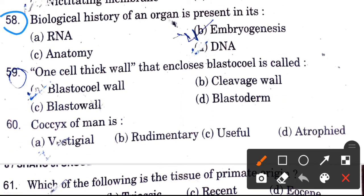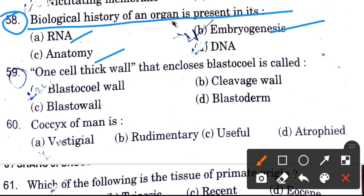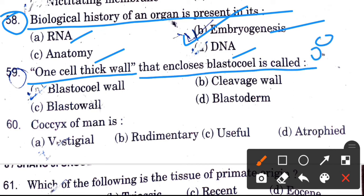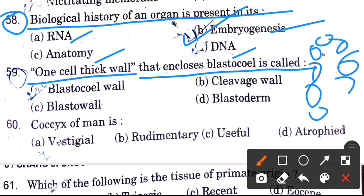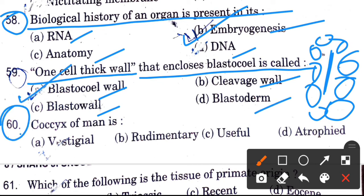Biological history of an organ — an organ's biological history is presented in — options are RNA, embryogenesis, anatomy, and DNA.